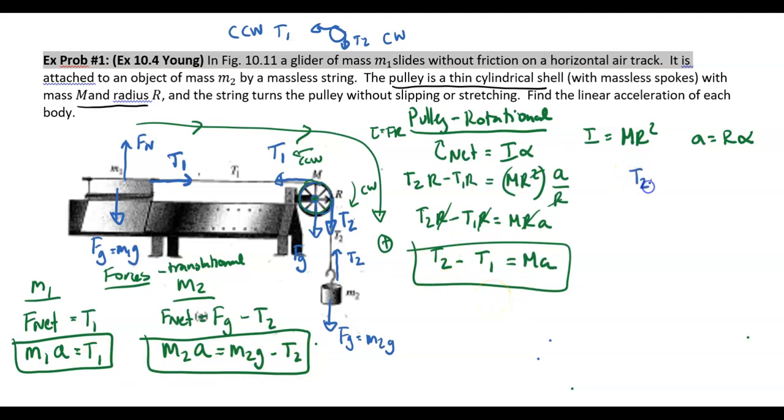So T2 minus T1 equals MA. We have M2G minus T2 equals M2A. And then M1A is just going to be T1.